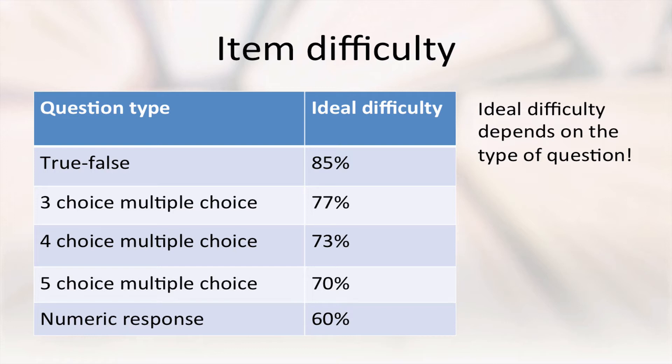Notice that this places restrictions on the kinds of material we can test with each question type, too. If we test difficult material with a true-false test, for example, it will become impossible to tell the difference between students who had an average level of understanding and those who had little understanding but were even moderately lucky with their answers.